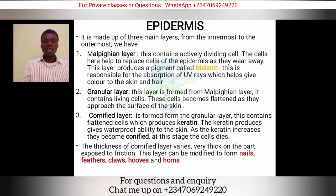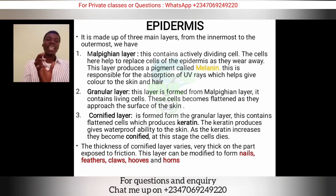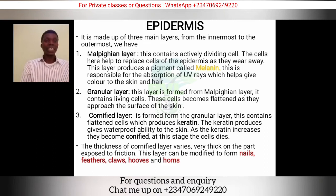If you set any of these structures — nails, feathers, claws, hooves, horns — on fire, they all smell the same way that hair smells when burned. This is because they all contain keratin, and so does the hair on our body. They came from the same structure and contain the same protein, keratin.